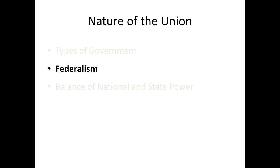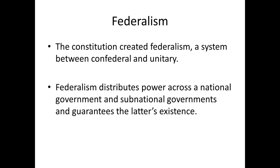So what happens is they create a new system at the Constitutional Convention — a federal system that's basically a go-between between a unitary and a confederal system, where power is distributed across both the national government and the sub-national governments, i.e., the states. Under the new constitution, the federal government has certain powers, states have certain other powers, and the federal government is not able to dissolve or substantially eliminate the powers that the states hold. The existence and sovereignty of the states is basically guaranteed.